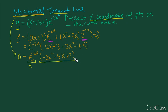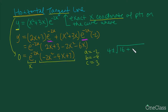We look at the quadratic factor −2x² − 4x + 3. We can't factor it, so we use the quadratic formula. Here a = −2, b = −4, and c = 3. The quadratic formula is x = (−b ± √(b² − 4ac)) / (2a). Be very careful with the negatives — negative b here means negative of negative 4.